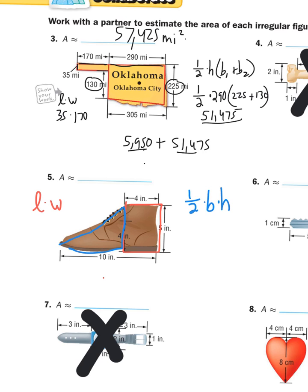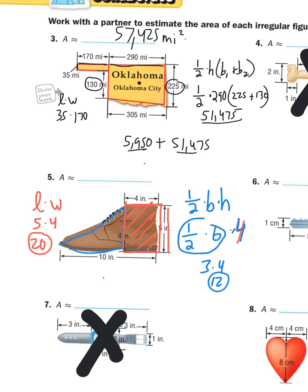For the rectangle: the dimension is 5 by 4, so 5 times 4 equals 20 square inches. For the triangle: height is 4. The base — the whole bottom is 10, subtract the red rectangle portion of 4, leaving 6. So: half times 6 times 4. Half of 6 is 3, times 4 is 12 square inches. Add 20 plus 12 to get 32 square inches as the approximate total area.